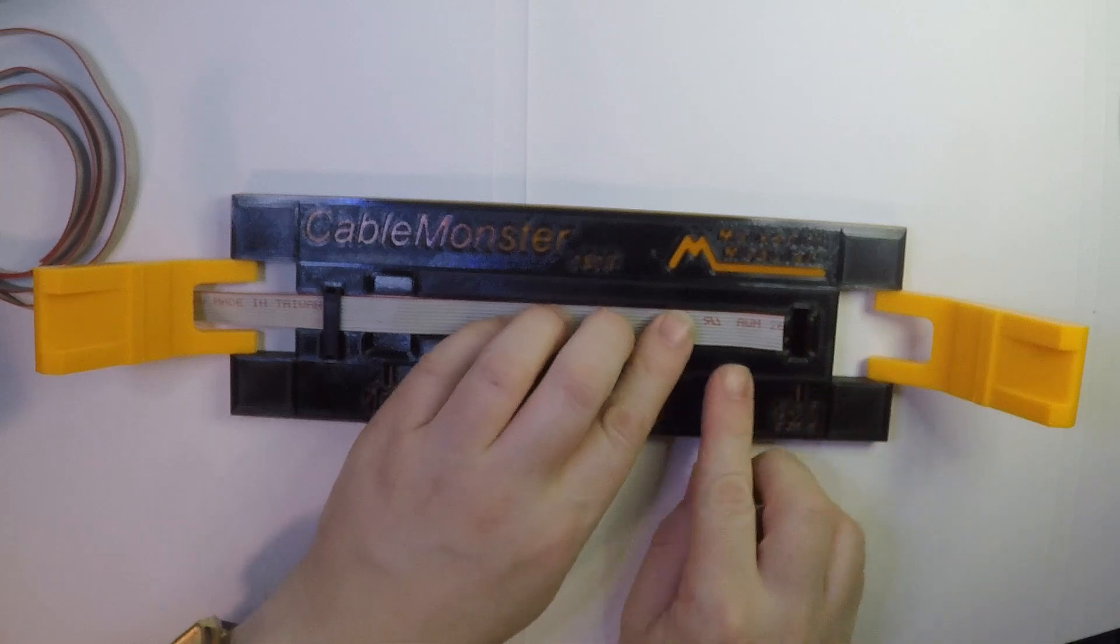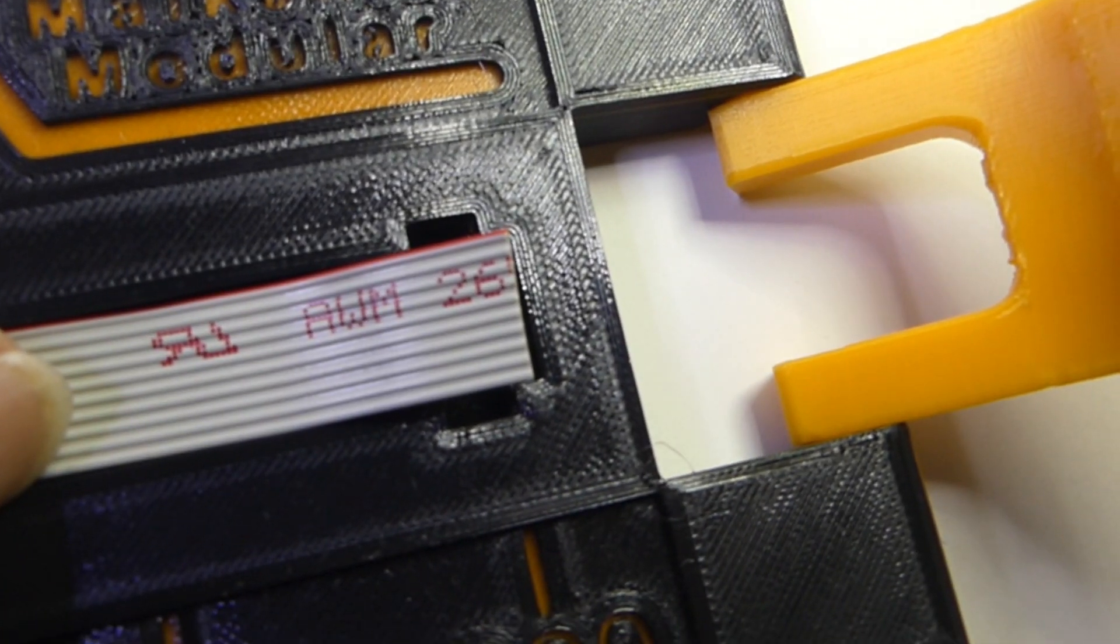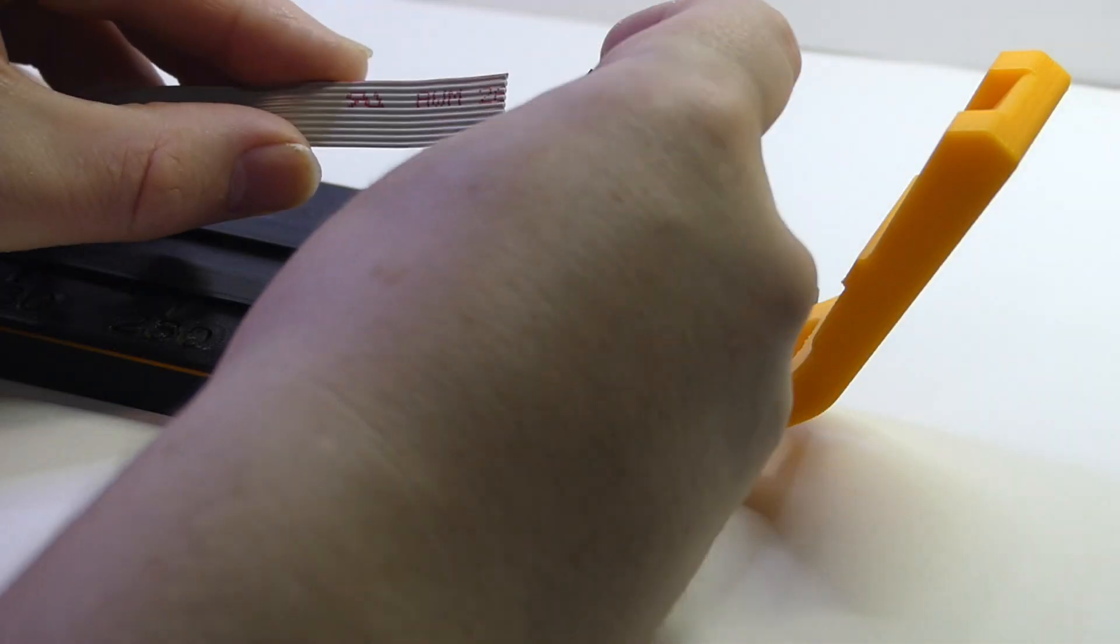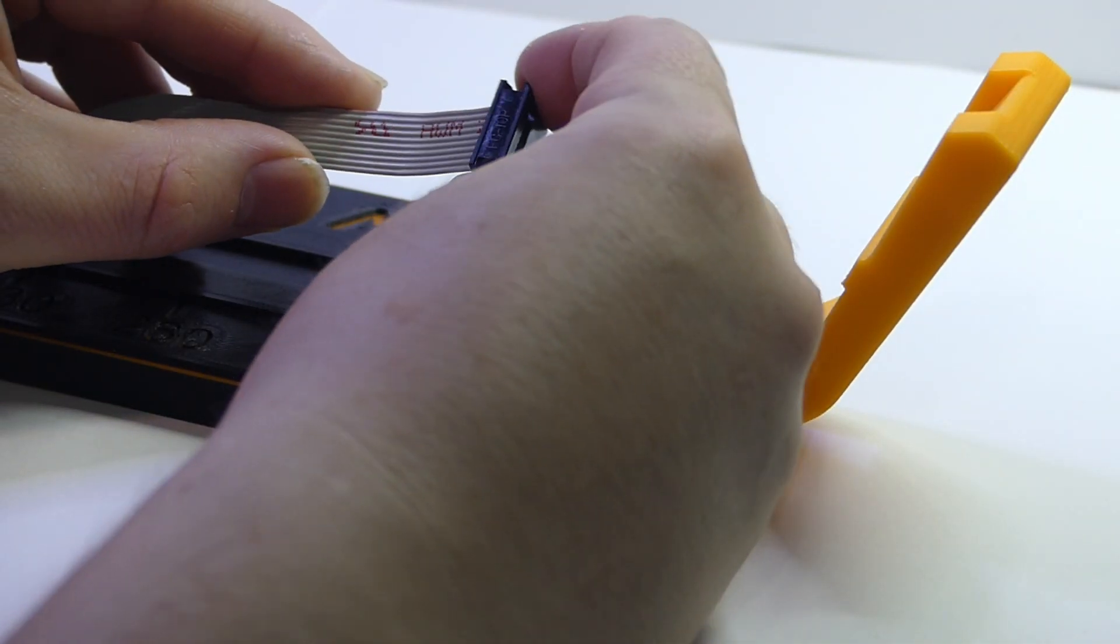Now feed the cable along the slot until you hit the backstop. Thread on the 10-way connector using the receiving hole as a guide for the correct orientation, just like before.